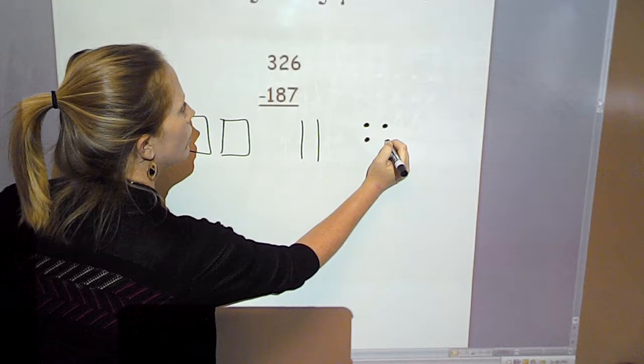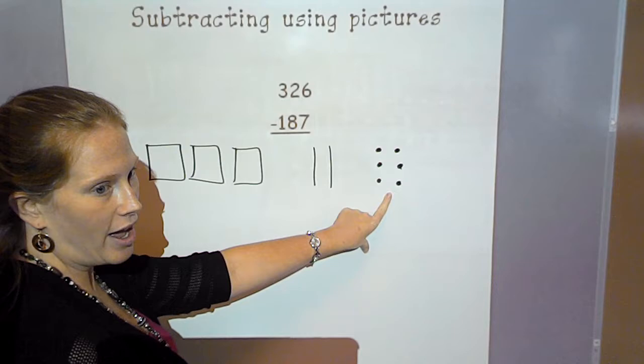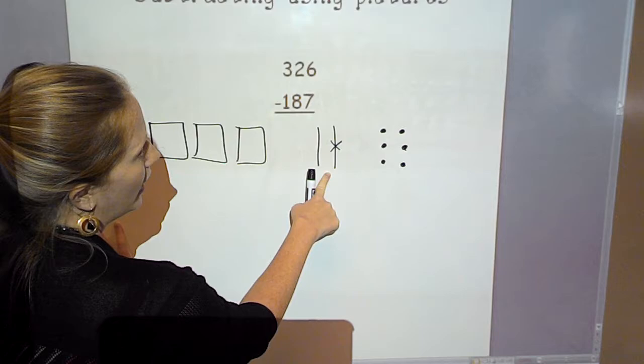And I'm taking away 187. So when I'm subtracting, I'm going to start, and I'm going to take away 7 ones first. So I have 6 ones right here. I don't have enough. So I'm going to go to my 10 and break it apart. And I know if I break apart my 10, I get 10 ones. So I'm going to draw that right here and give myself 10 ones.